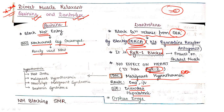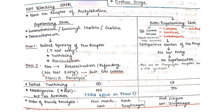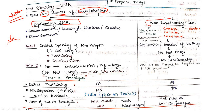Neuromuscular blocking SMR is another very important section. These drugs block the NM (nicotinic muscular) receptors of acetylcholine. Based on their mechanism, they are divided into two groups: depolarizing SMR and non-depolarizing SMR. Depolarizing SMR includes succinylcholine (succinylcholine) and decamethonium.